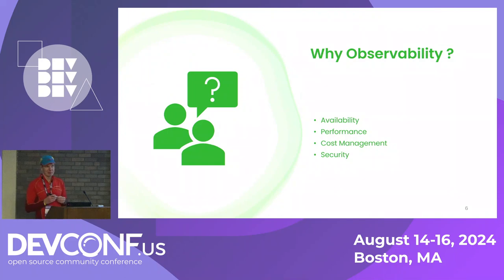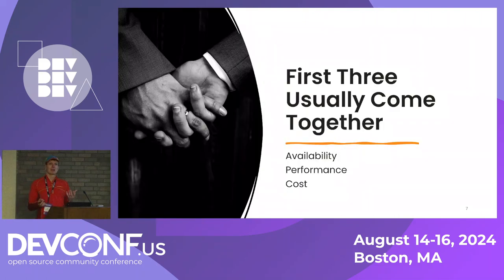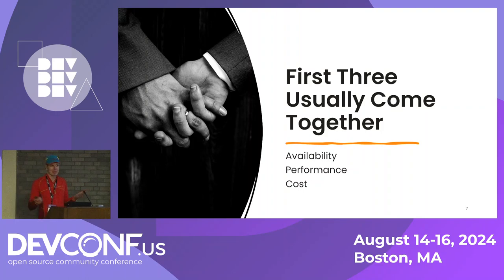Why do we need observability? If you think about the top reasons, it's to ensure availability and performance of applications, to manage cost, and also to ensure security. Security kind of stands on its own, and frankly I'm not a big security expert, but the first three typically go together. If you think about a system which becomes slow and uses too many resources, it drives cost, and it also looks down from a user standpoint — because if a web page takes three hours to respond, users aren't waiting.